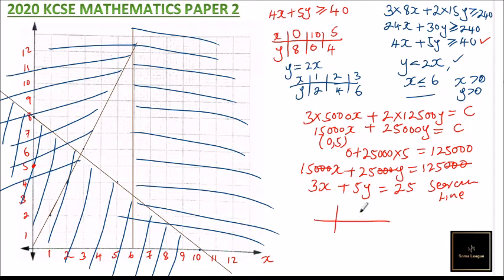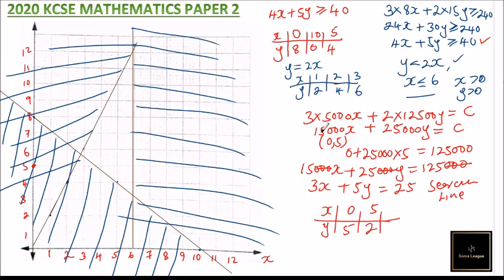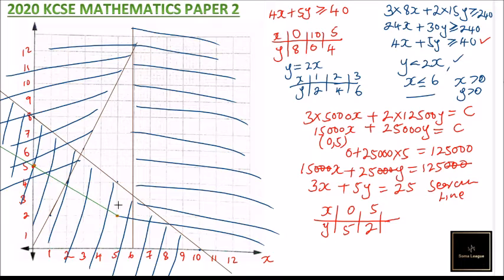We make a table for the search line 3X + 5Y = 25. When X = 0, Y = 5. When X = 5, Y = 2. We use these two points to draw the search line on the graph, using a dotted or different-colored line to differentiate it from the constraint lines.